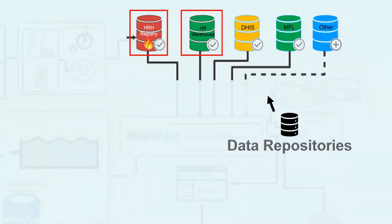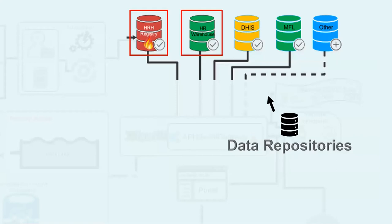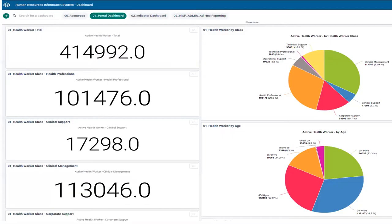Data sits within the HRIS system at different levels of detail. The HRH registry stores a detailed view of a health worker practitioner record, consolidated from data coming from different primary data sources. The registry is implemented using HAPI FHIR, an open source FHIR server. The HRH data warehouse stores aggregated data for HRH planning and reporting and is implemented using DHIS2. This slide shows aggregated data on the DHIS2 dashboard — we can use any DHIS2 favorite for analysis of our data.